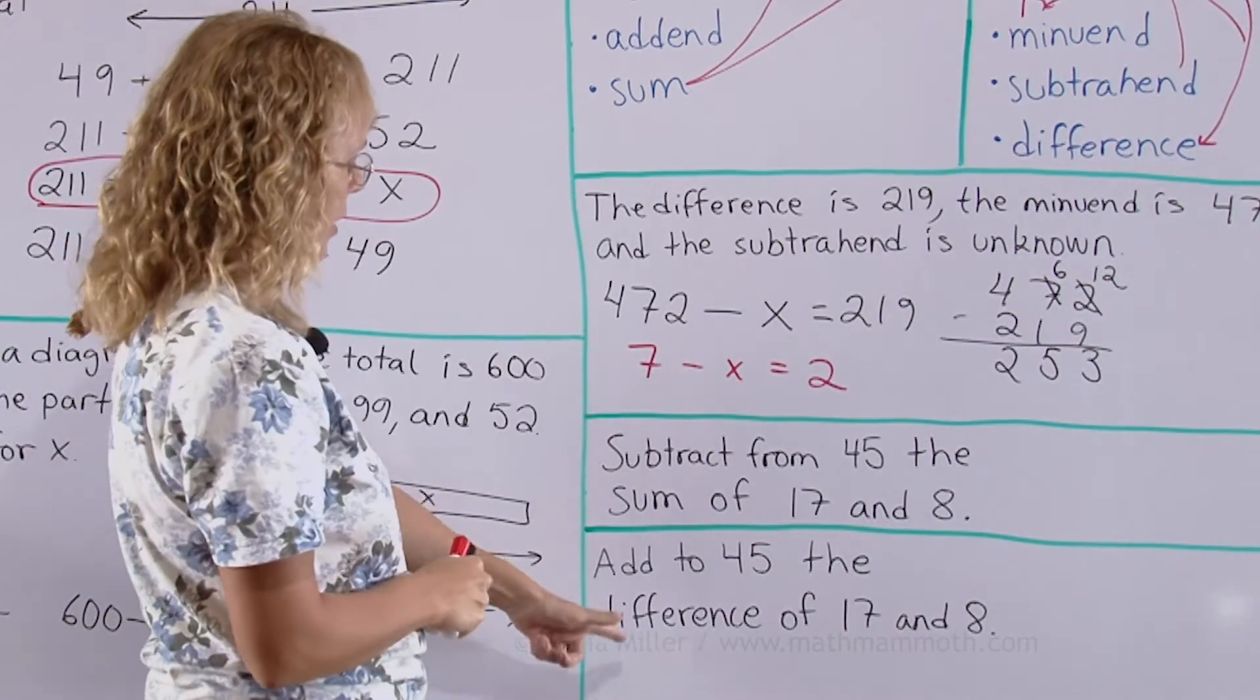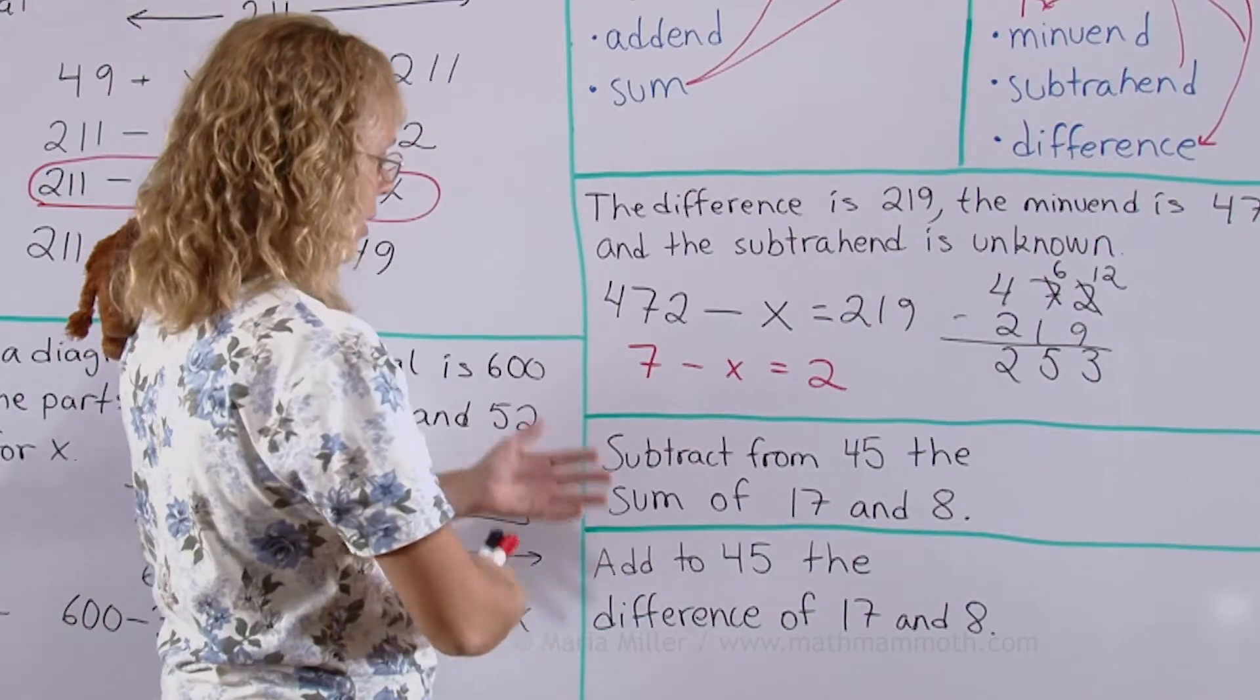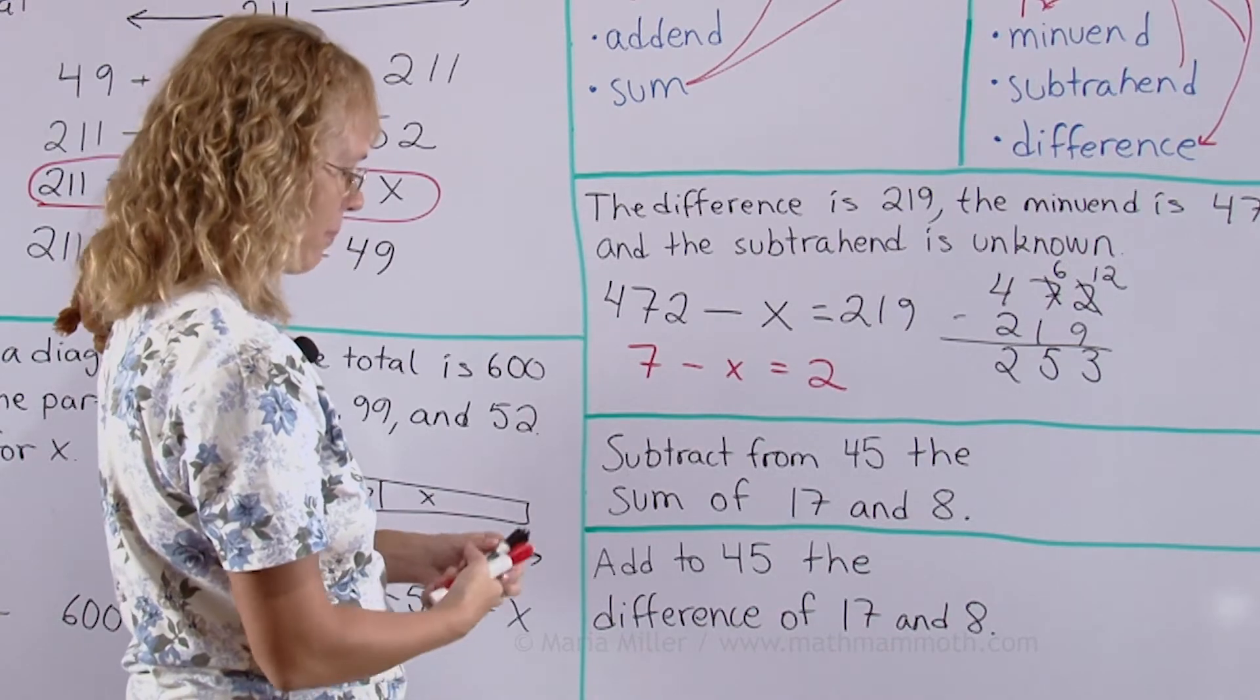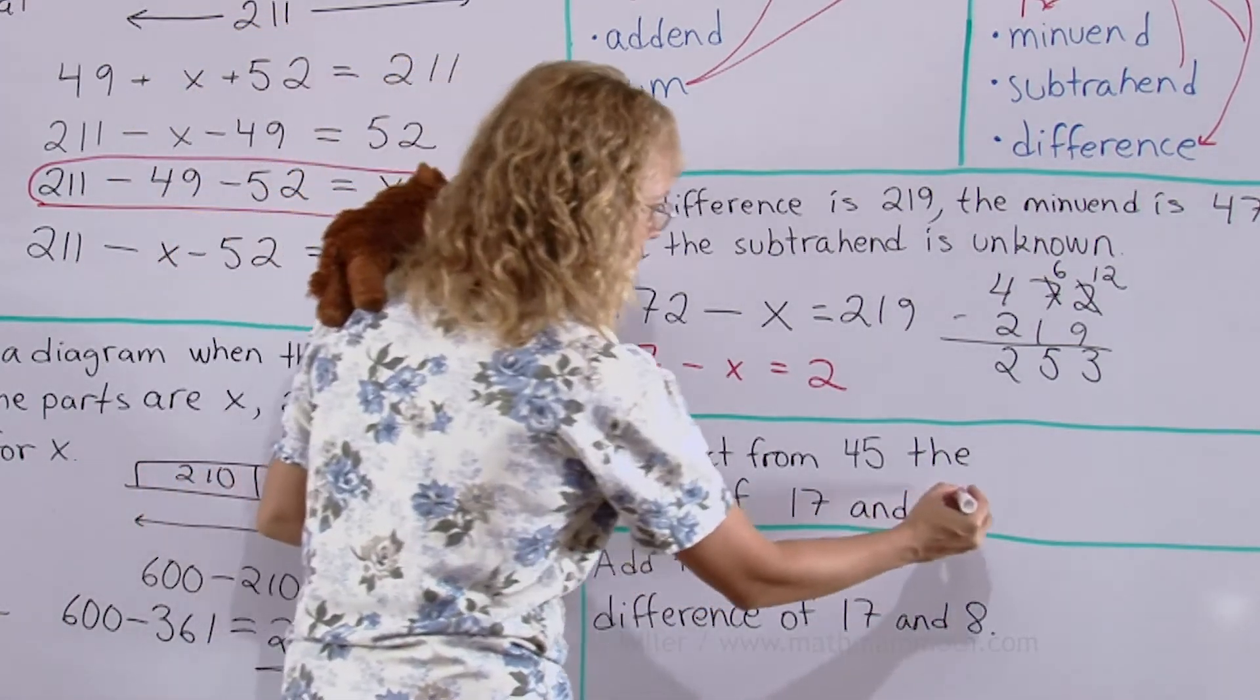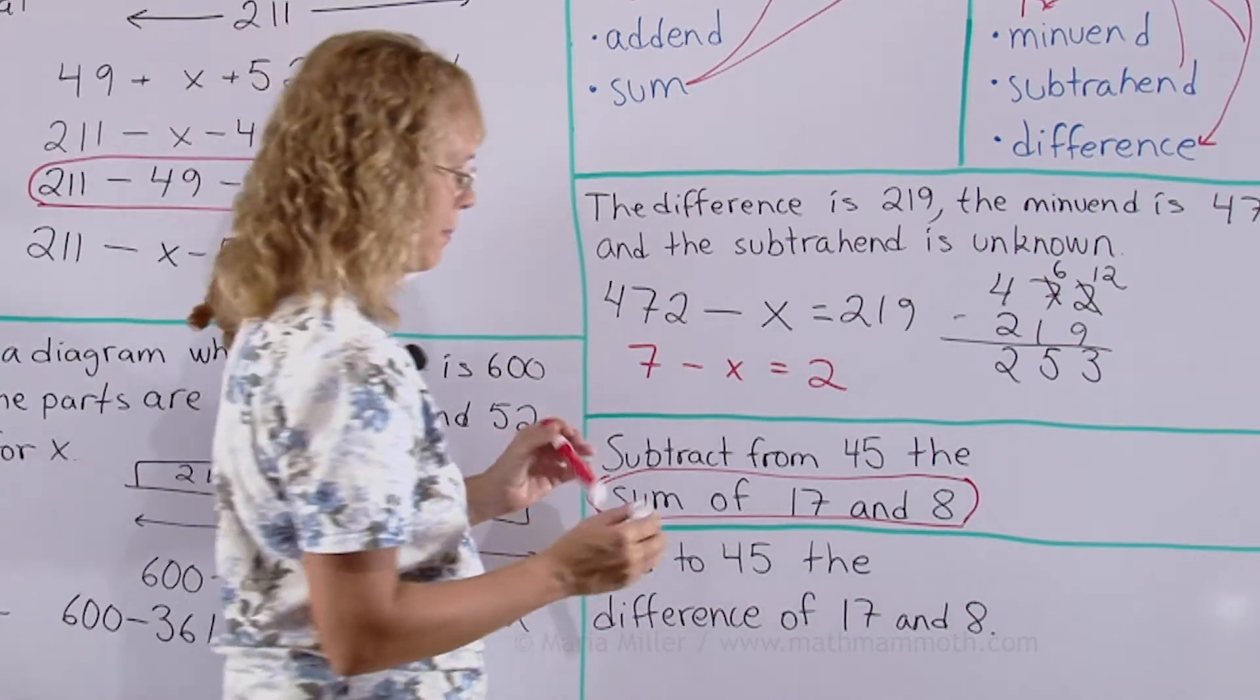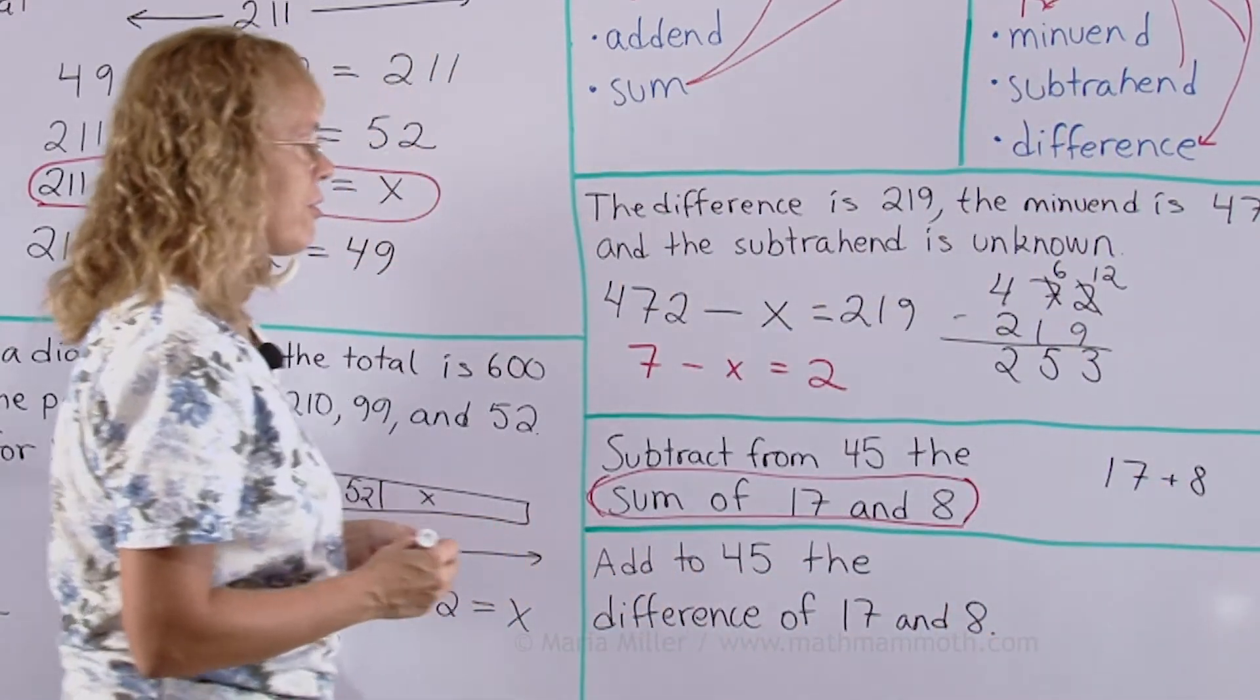All right, let's go on. In these last two ones, we need to write the expression to match this verbal sentence. Subtract from 45, the sum of 17 and 8. Think first of this, what it says, the sum of 17 and 8 here. That is simple language. It means 17 plus 8. It's a subtract from 45. That means 45 minus something. 45 minus that thingy. So 45 minus.